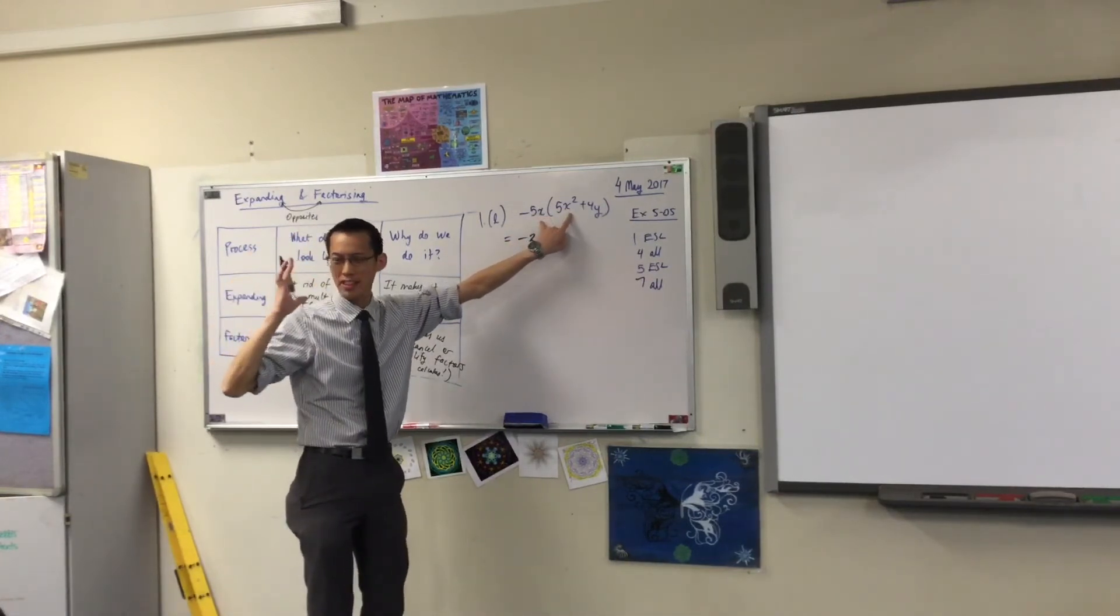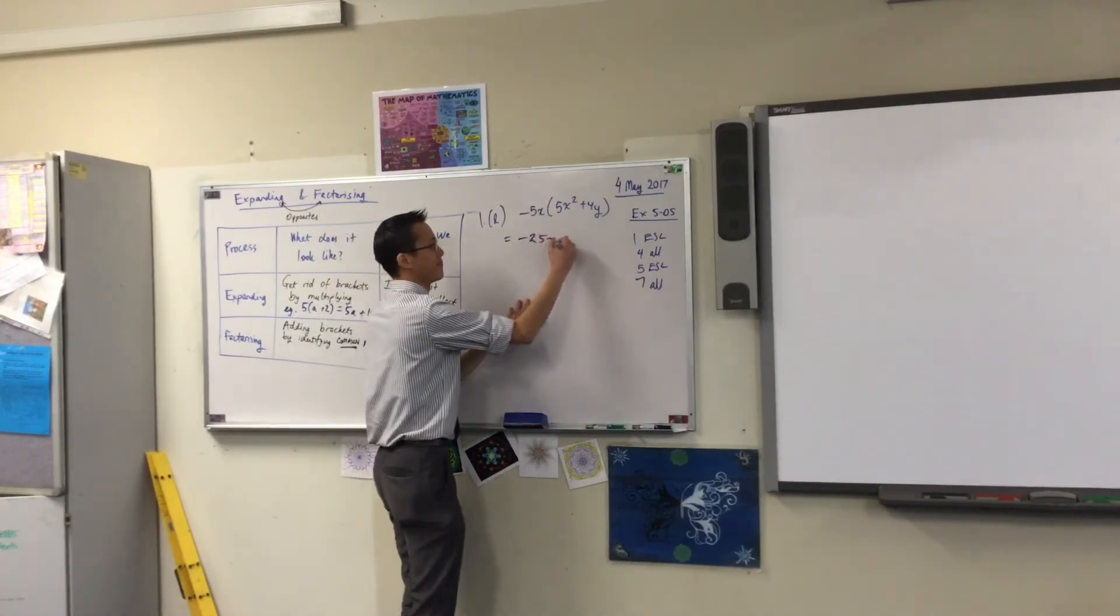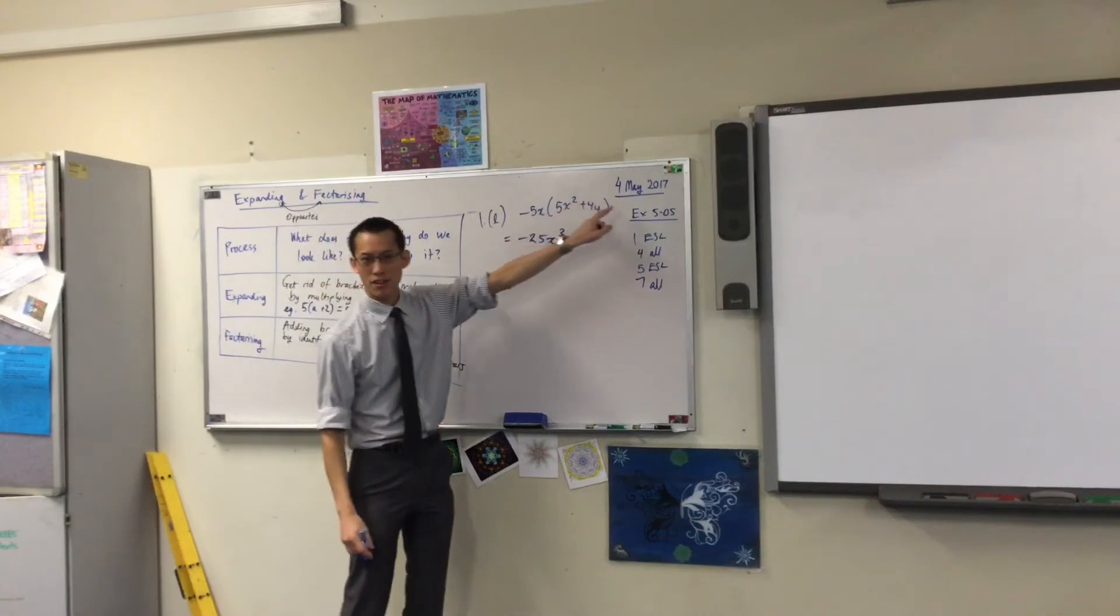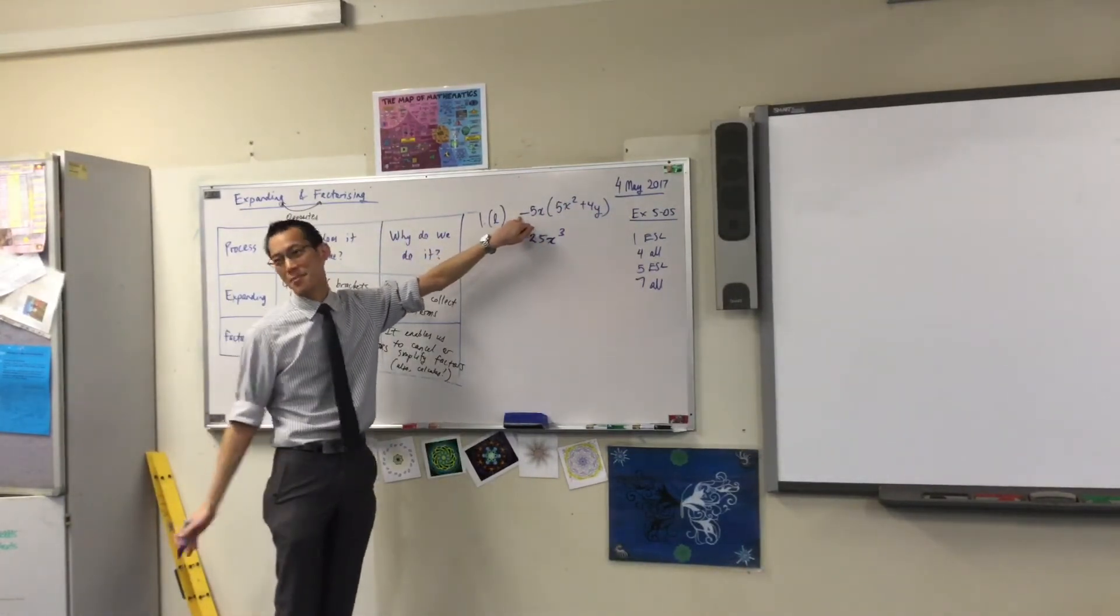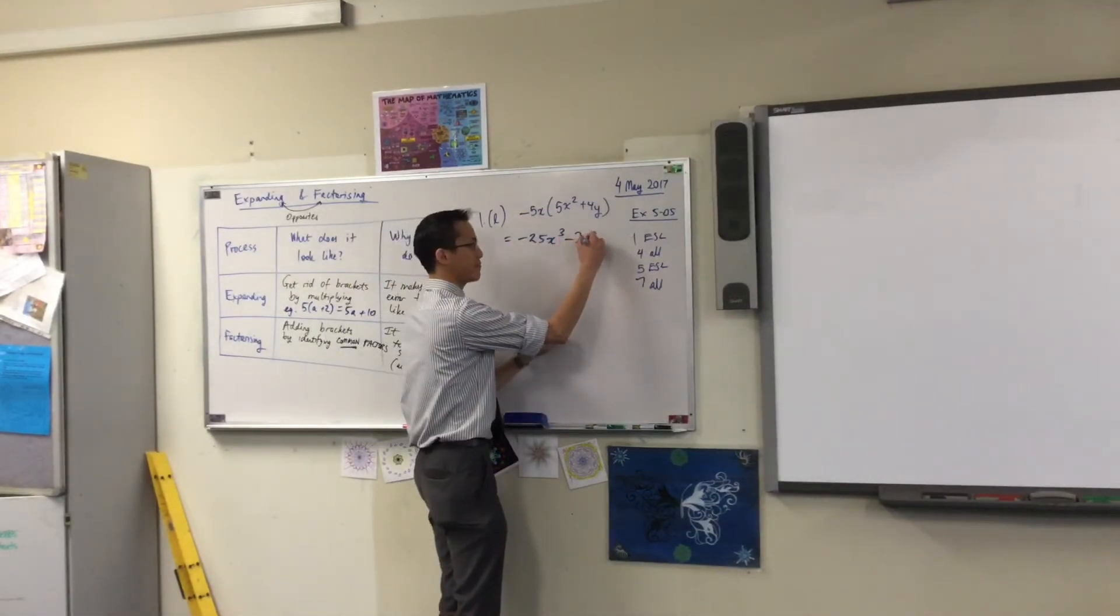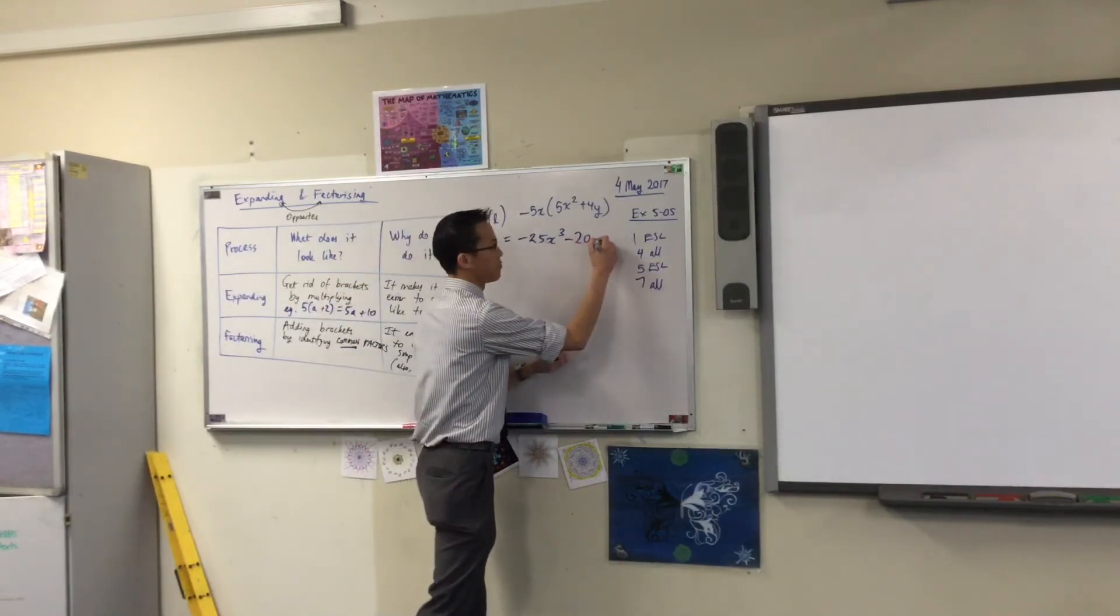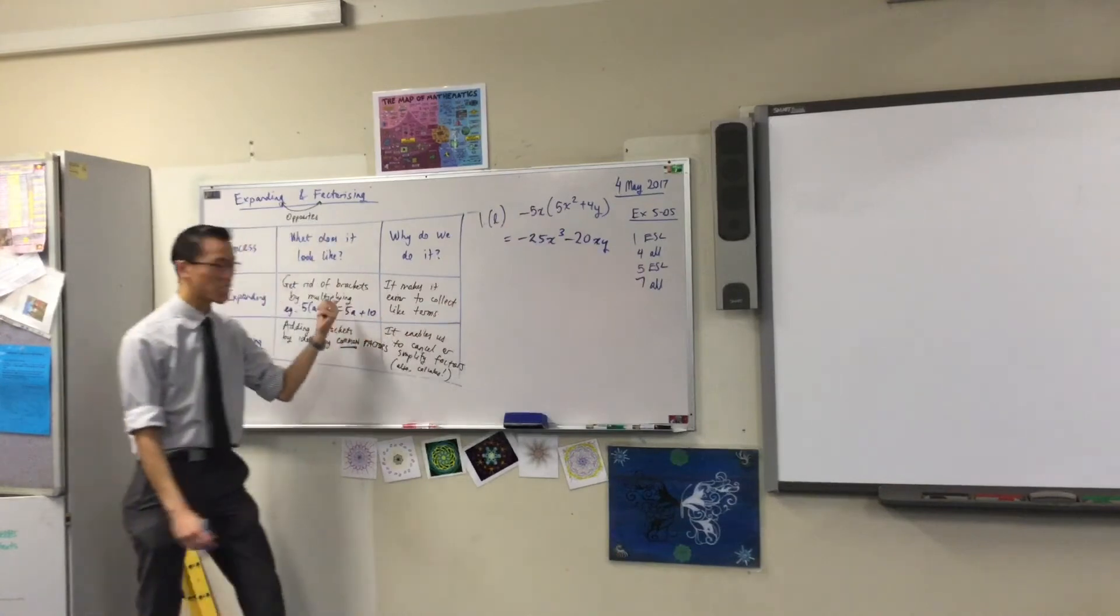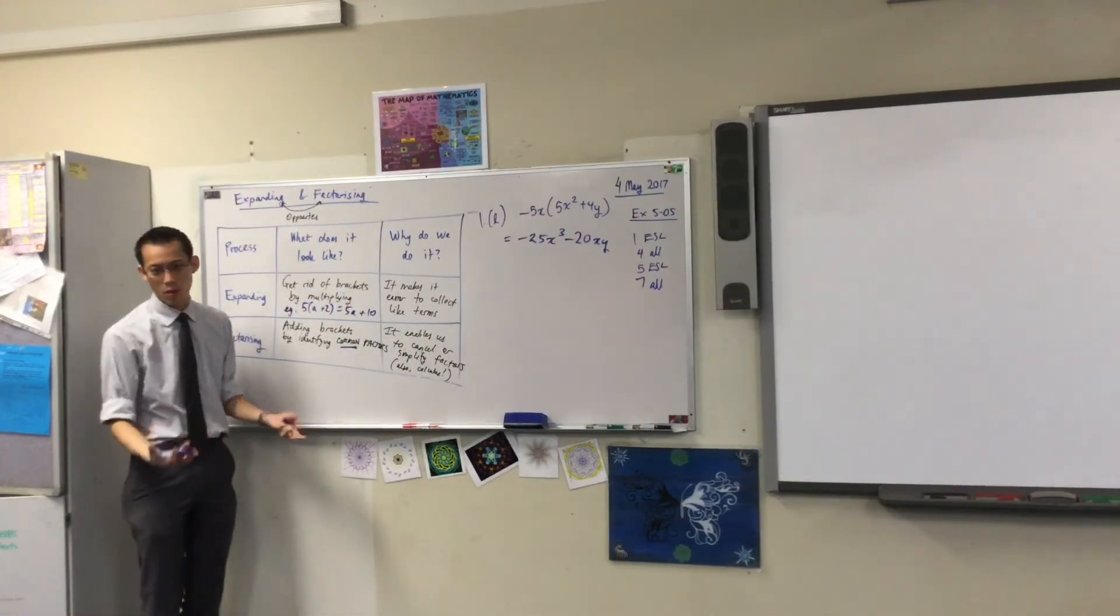You need to sort of be able to do this a bit on autopilot. Not think too hard. X times X squared. X cubed. Fantastic. First term is done. Now I'm going to multiply through the next one. Always watch out for that negative. That is the most common error to make with all of these. Negative 5 times 4 is negative 20. And then you look at the pronumeral. X times Y. That wasn't complicated, okay? Generally, people find expanding much easier to do because multiplying, you can do it somewhat mindlessly.